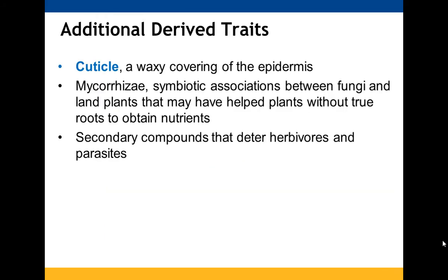Some other derived traits include cuticles — the waxy layer on the surface of leaves, which is why we had to use a little detergent in the photosynthesis experiment to break through it. Mycorrhizae are symbiotic associations that help plants get the nutrients they need through their roots. There are also secondary compounds that prevent herbivores and parasites from eating the plants.